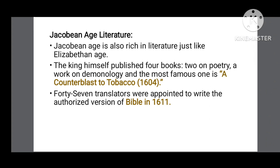In Jacobian Age literature, good literature was produced. King James was a very literary person, and he himself published four books, which included two on poetry, a work on demonology, and the most famous one is A Counterblast to Tobacco, which was published in 1604.